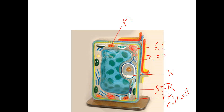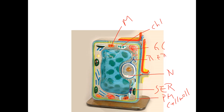These green things — here's one that's cut open, and here's one that's not — those are chloroplasts. Chloroplasts contain the chlorophyll that helps to absorb light so the plant can carry out photosynthesis.